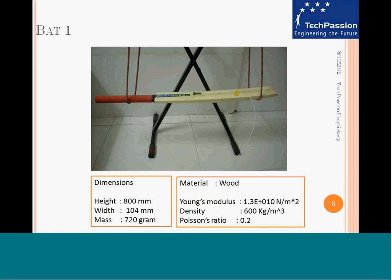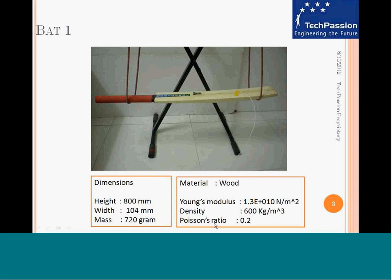Let's look at the first bat. This is the experimental setup — here is the bat, and we hang it using bungee cords to simulate free-free boundary conditions. The dimensions of the bat are: 800 millimeters in length, an average width of 104 millimeters, and it weighs 720 grams. The material is wood. We also did finite element analysis for this bat to estimate the resonant frequencies through simulation, and for that purpose we used the elastic modulus, density, and Poisson's ratio as shown.